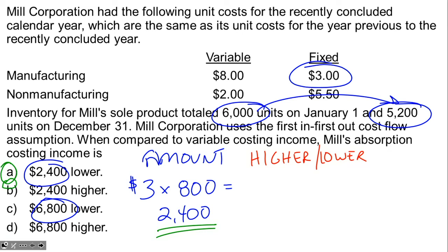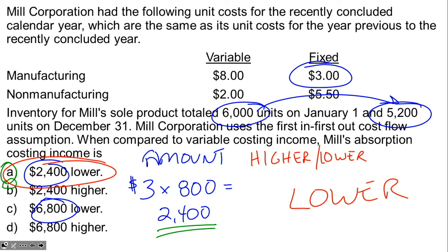So under absorption costing, income is going to be lower than it would have been under variable costing. The correct answer is choice A — absorption costing income would have been $2,400 lower than under variable costing. In this question, the variable cost per unit and the fixed non-manufacturing cost per unit are irrelevant. All we need is the change in inventory and the fixed manufacturing cost per unit.